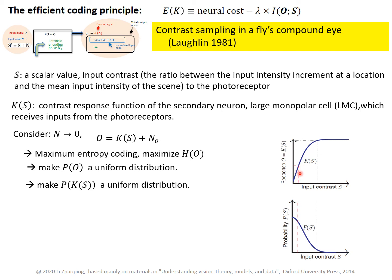That means it is more sensitive to changes in low contrast and less sensitive to changes in high contrast. And this will map input to output, and if we plot this output in probability, it is going to be more uniformly distributed.